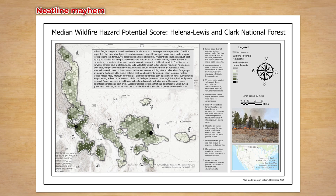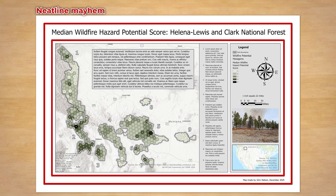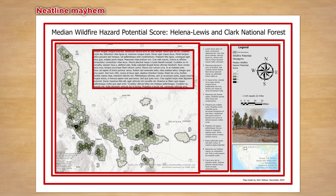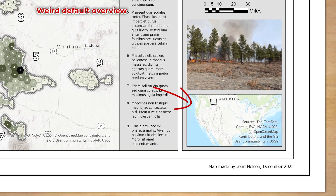I count one, two, three neat lines before we even hit the map. It's really easy to get sucked into too many neat lines, but we don't need this one, or this one, or this one, or this one, or this one, or this one.